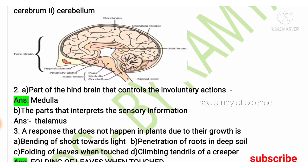Second question: the part of the hind brain that controls involuntary actions. The right answer is medulla. Medulla is the part of the hind brain that controls all involuntary actions. Followed by: the parts that interpret the sensory information — in your brain, sensory information is interpreted by the thalamus. The right answer is thalamus.